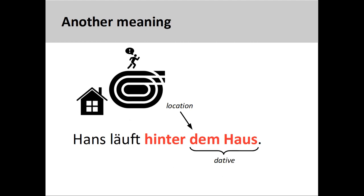If, however, he has a track in his backyard and runs around it to keep in shape, this activity is localized. To report the position or location of his activity, therefore, we would need to use the dative case. Hans läuft hinter dem Haus.